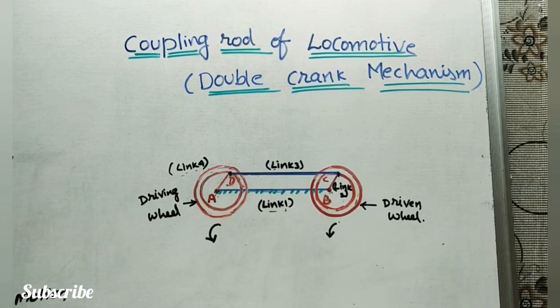So this mechanism we are using in automobile vehicles for transmitting rotary motion from one wheel to another wheel. This is the main use of this mechanism.